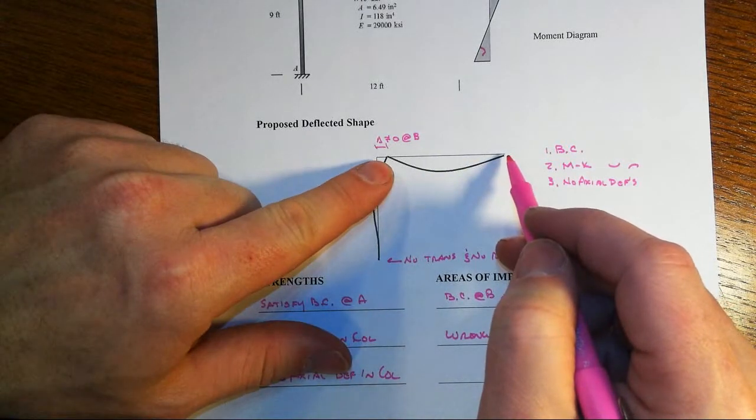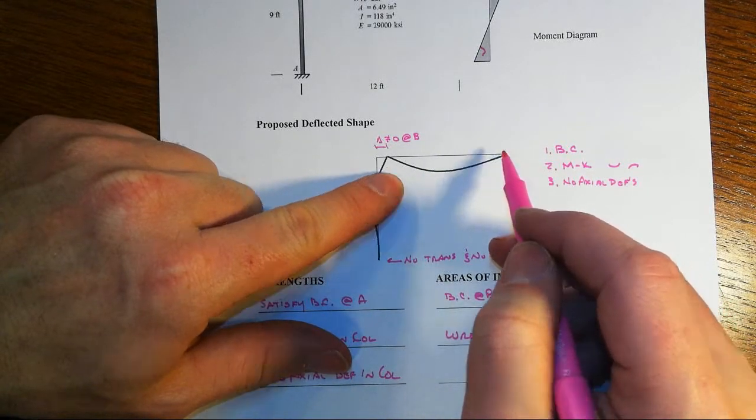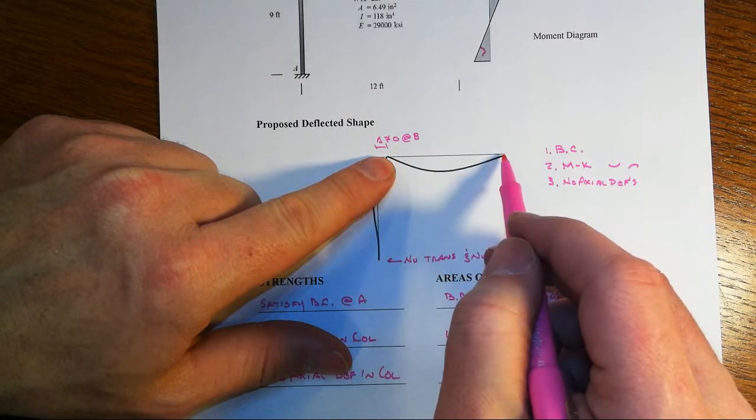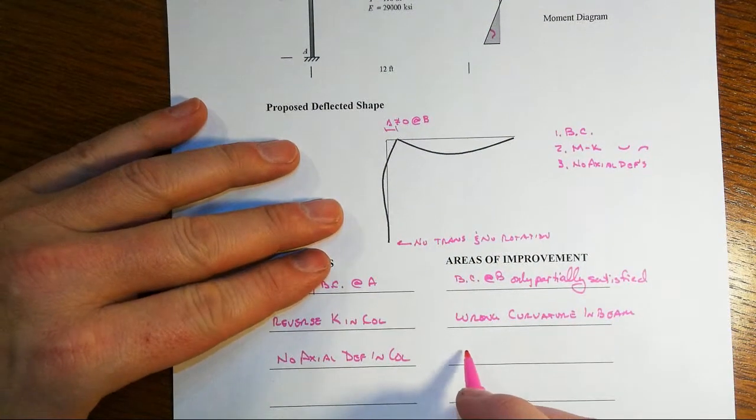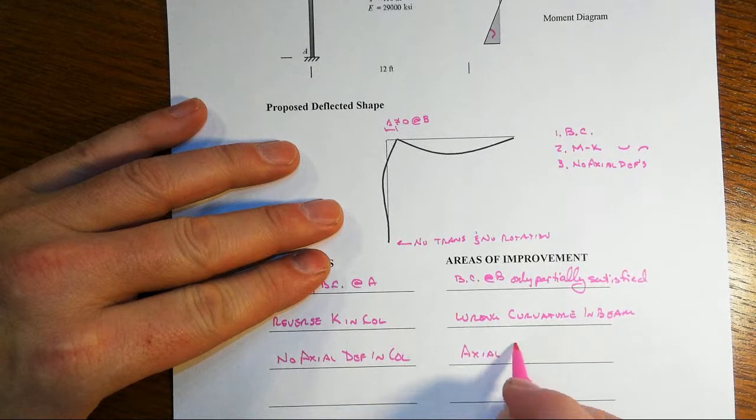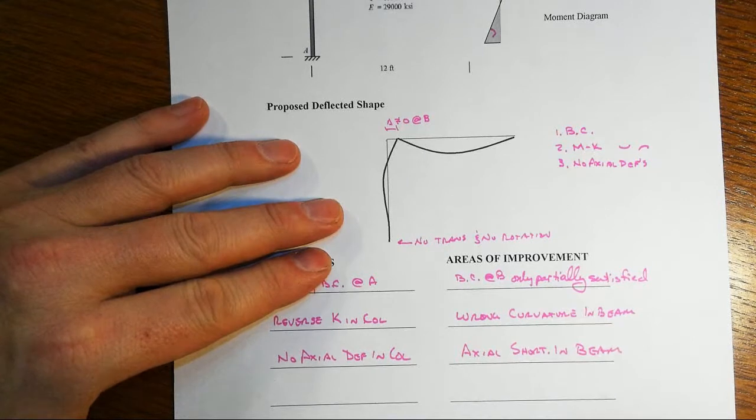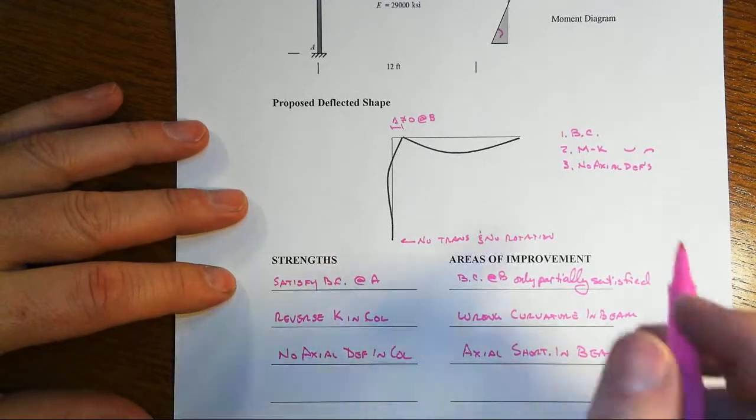However, note here for BC, it would sure look like we got some translation of joint B, but we don't have any translation at C, so we have axial shortening in the beam. Looks like the beam is having all kinds of problems here.